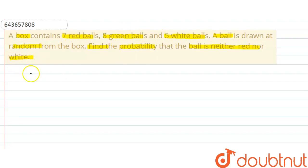First, we will write the given values. The number of red, green, and white balls are 7, 8, and 5 respectively. The total number of balls in the box is equal to the sum of these three.